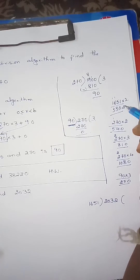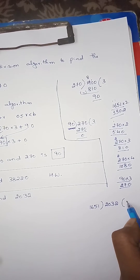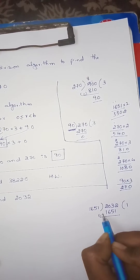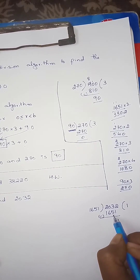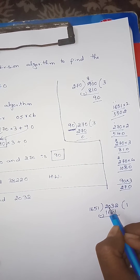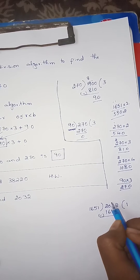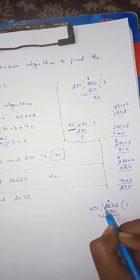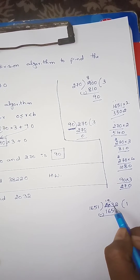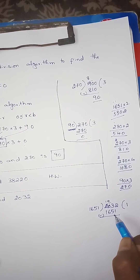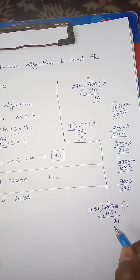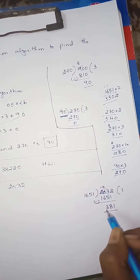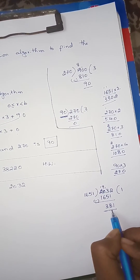Working through 2032 divided by 1651: we get quotient 1. Remainder calculation: 10, 9, 1, 13, 5, 6, 7, 8, 9, 6, 3. That gives remainder 381. Now we will do 381 into 1651.